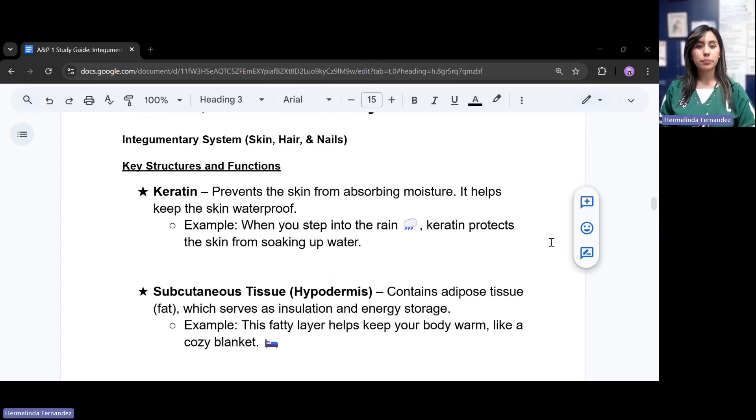So first we have keratin. Keratin prevents the skin from absorbing moisture, it helps keep the skin waterproof. So an example of this would be when you step into the rain, keratin protects the skin from soaking up that water.